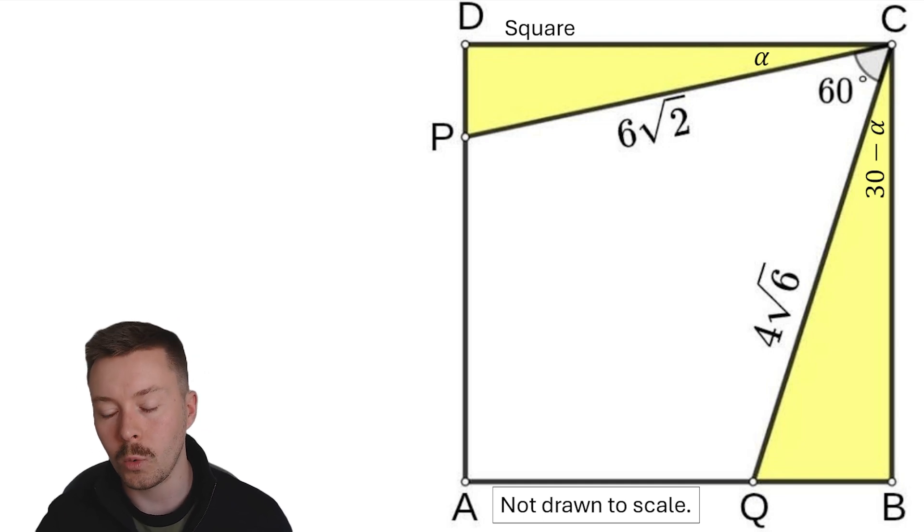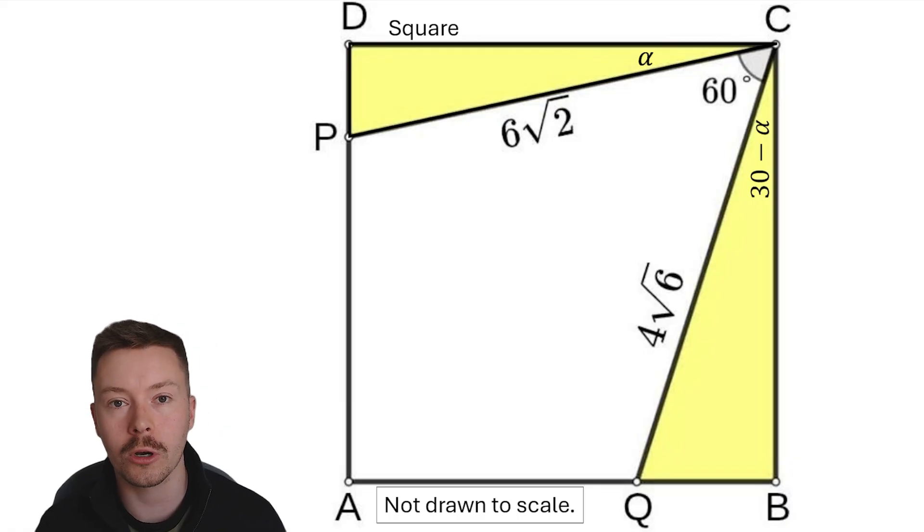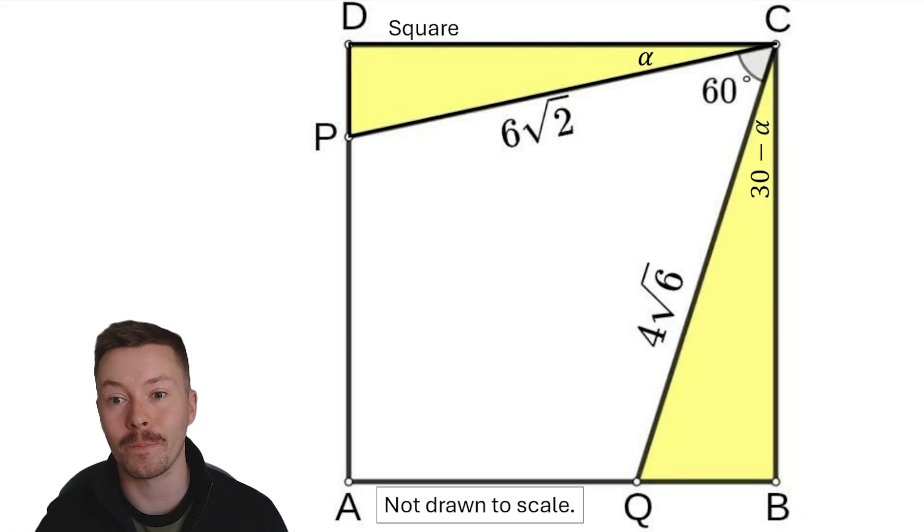We know that C to D is going to be the same length as B to C because it's a square. If we were to take this triangle C, D, P and line it up next to triangle B, C, Q, we know they would line up exactly because they've got the same length side, C, D, and B, C.